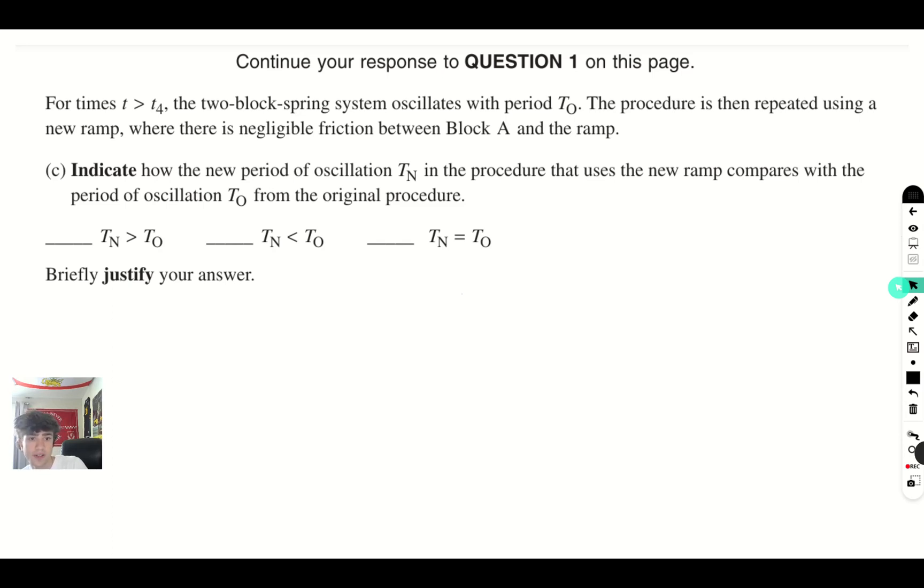Alright. For time t is greater than t4, the two-block spring system oscillates with period T0. The process is then repeated using a new ramp where there's negligible friction between block A and the ramp. Indicate how the new period of oscillation in the ramp compares with the period of oscillation from the original procedure. Alright, guys. So this is a pretty simple problem if you don't allow yourself to get tripped up by it. So we know that if the friction becomes negligible on the ramp, obviously, our block is going to have a faster velocity as it comes down, a stronger acceleration, and that means that our system is going to have a faster velocity. But this does not change our period of oscillation because, as we know, for a spring, for an oscillating spring system, we can just start with the force equation.